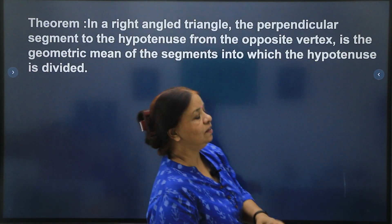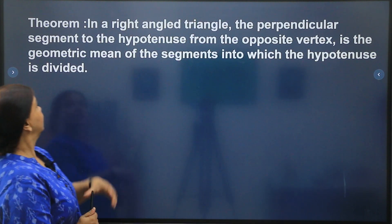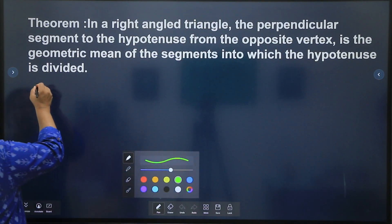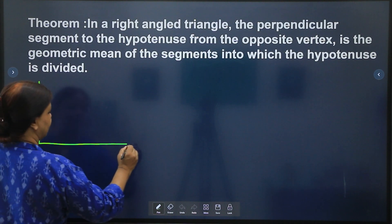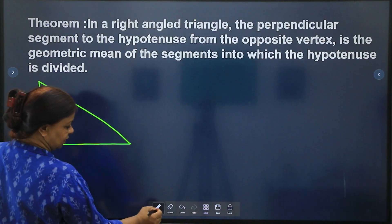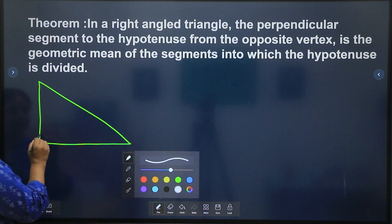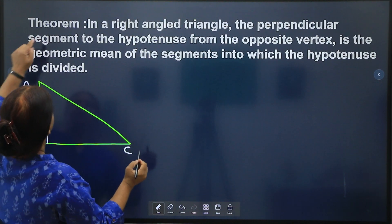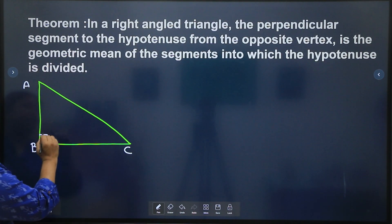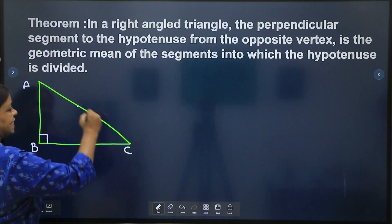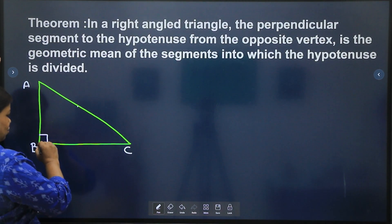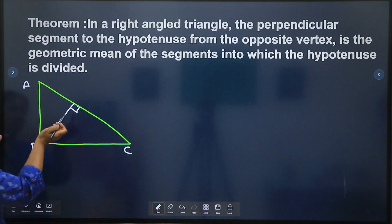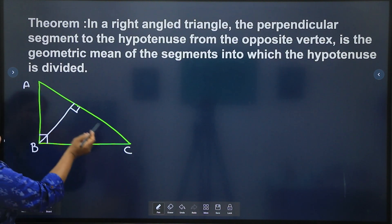segment to the hypotenuse - this is a right angled triangle - if I draw a right angled triangle ABC, in a right angled triangle the perpendicular segment to the hypotenuse, AC is the hypotenuse children, and if I draw a perpendicular segment to the hypotenuse from the opposite vertex to the hypotenuse, the vertex